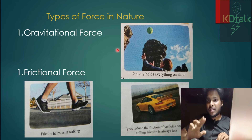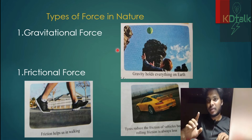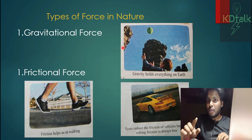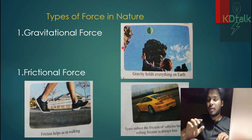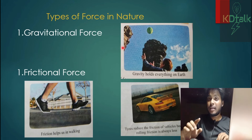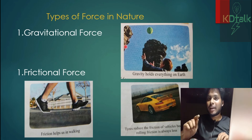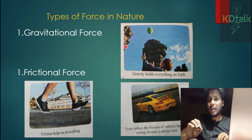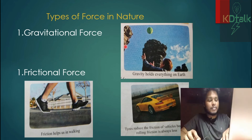The force of attraction between the sun and earth is also known as gravitational force. Due to this force, the earth remains in its orbit and keeps rotating around the sun. Likewise, the moon also revolves around the earth, and between earth and moon there is also a force known as gravity. Gravity pulls everything towards its center, and that is why we have atmosphere around the earth.